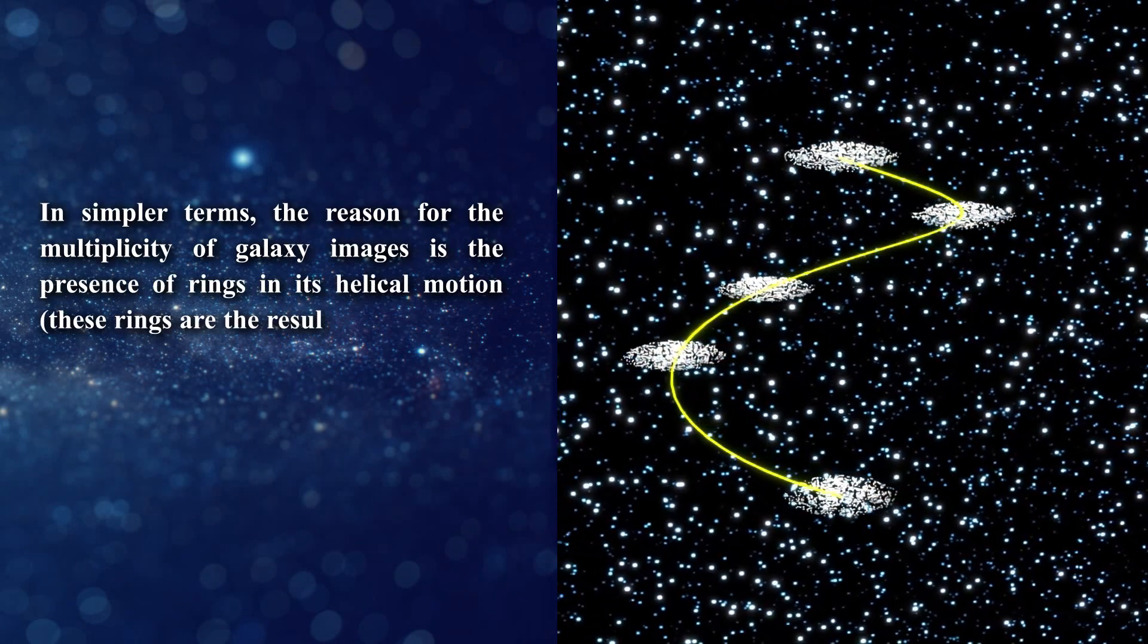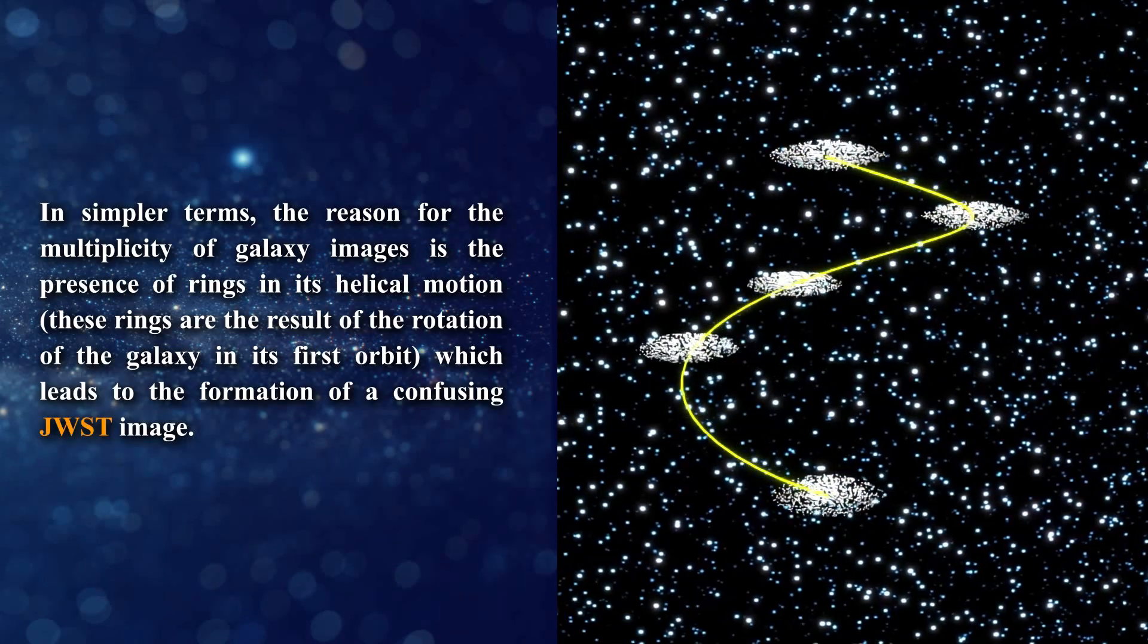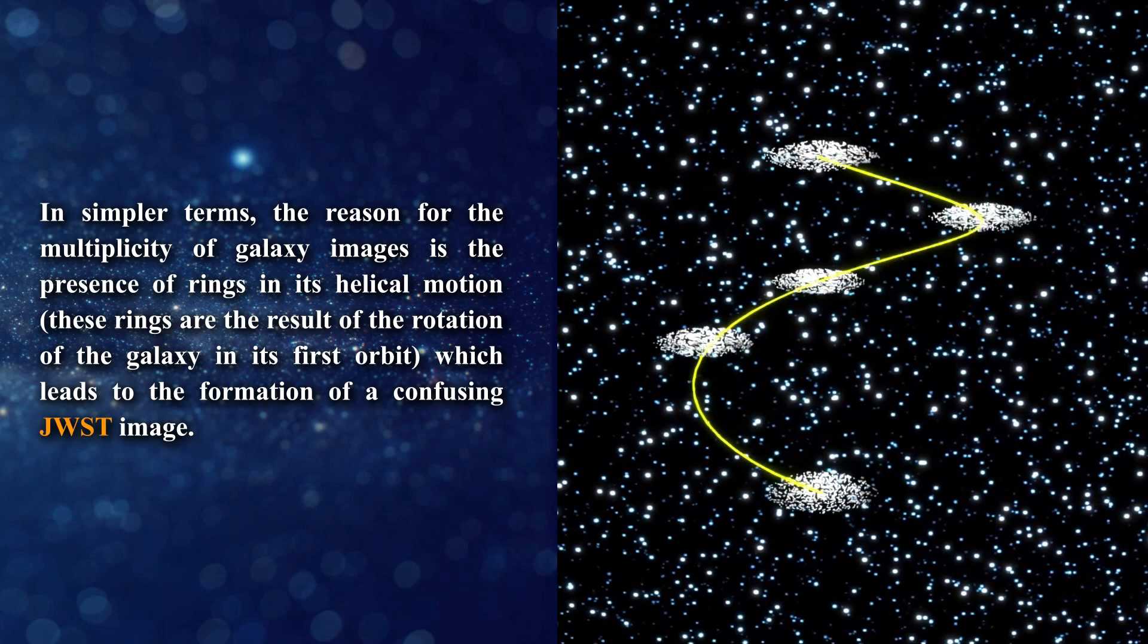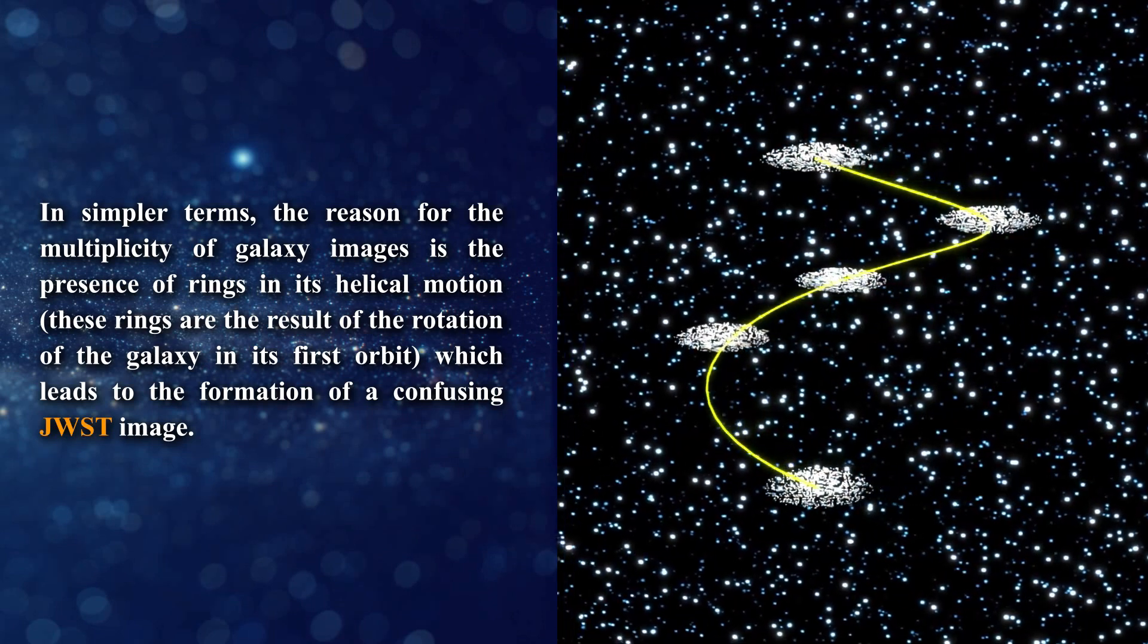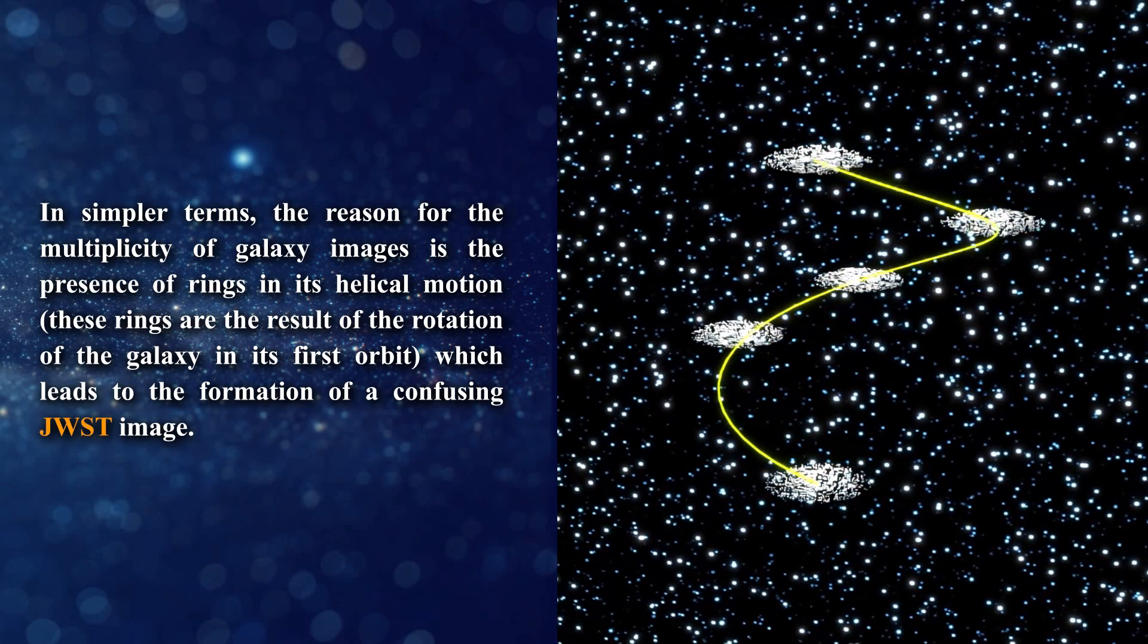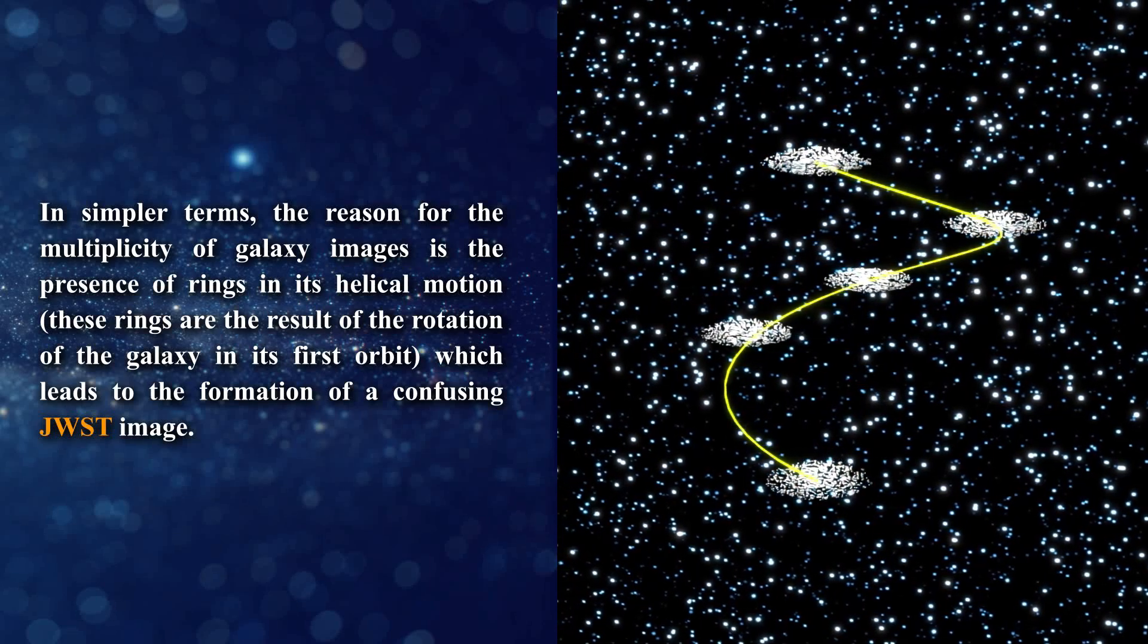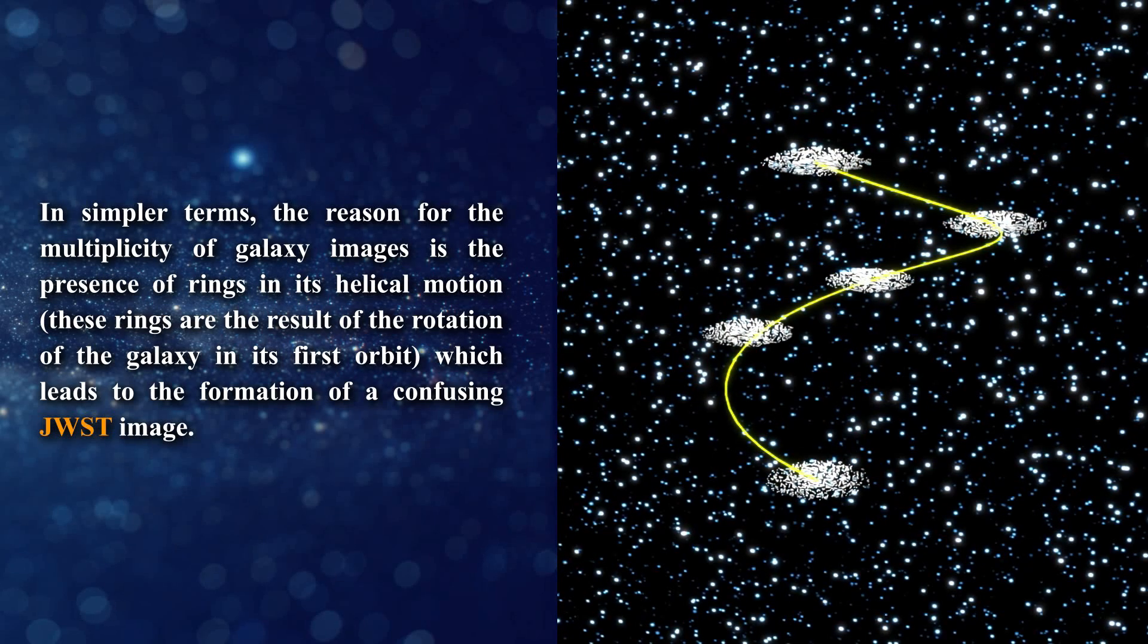In simpler terms, the reason for the multiplicity of galaxy images is the presence of rings in its helical motion. These rings are the result of the rotation of the galaxy in its first orbit, which leads to the formation of a confusing James Webb Space Telescope image.